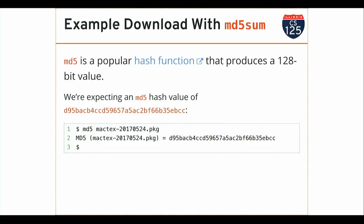We'll talk about why this needs to be so big in a minute. I'm expecting a hash value of some particular thing — and this is actual output from my computer. I downloaded the file and ran this program called MD5. The output from MD5 is the name of the file, and then it gives me the MD5 hash. I can see that these two hash values are the same, so I have the right file.